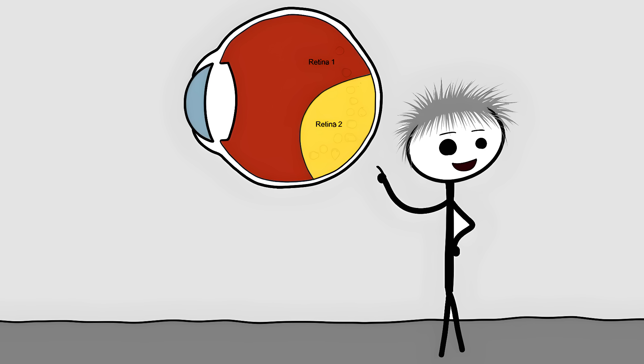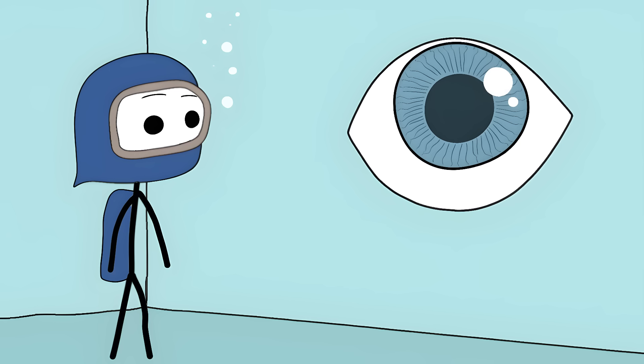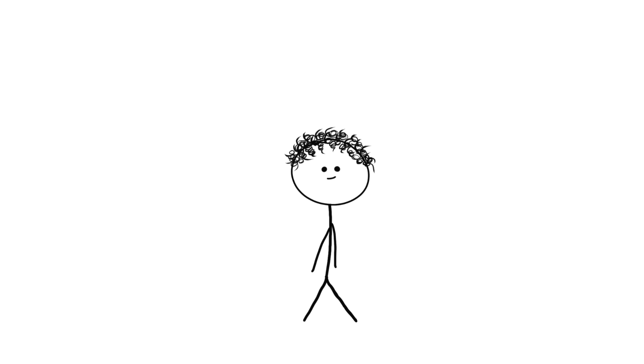Each eye has two retinas, one for spotting things right in front of it, and another for catching movement from the sides. And get this, these eyes use mirrors instead of lenses. The mirrors are made of perfectly aligned guanine crystals, the same stuff that makes fish scales sparkly.